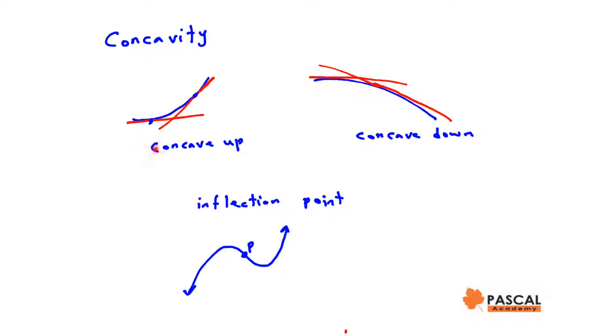Now, f of x is concave up on interval i if all the tangents to the curve on i are below the graph of f of x. f of x is concave down on interval i if all the tangents to the curve on i are above the graph of f of x.